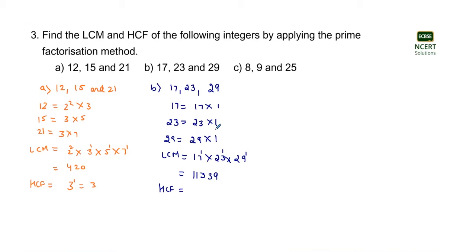Now we are required to find the HCF. The HCF is the product of the common prime factors involved in all three numbers. The only common factor in all three numbers is 1, so the HCF will be equal to 1 raised to its minimum power. The minimum power is also 1, so 1 raised to the power 1 equals 1.